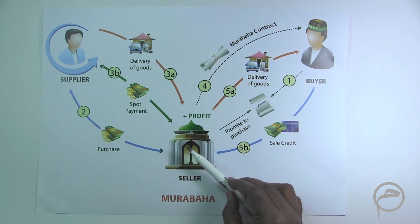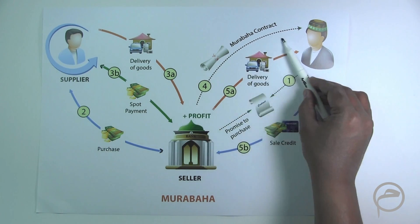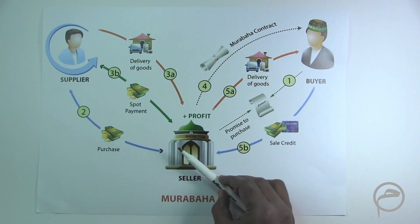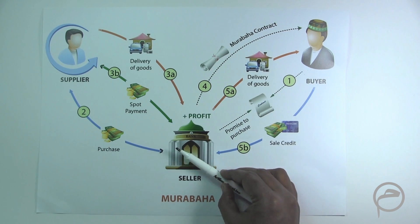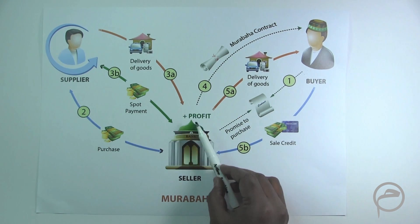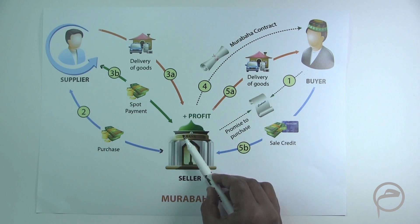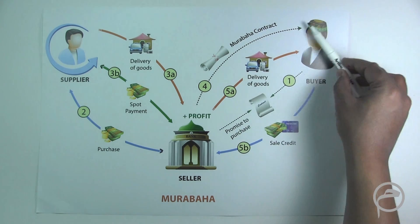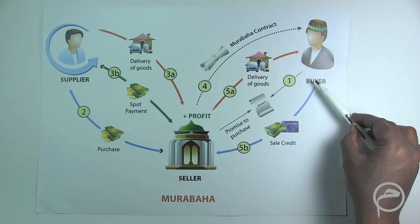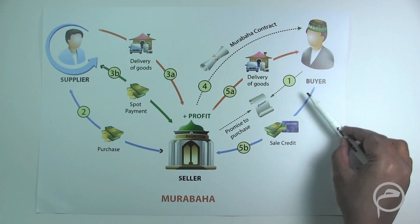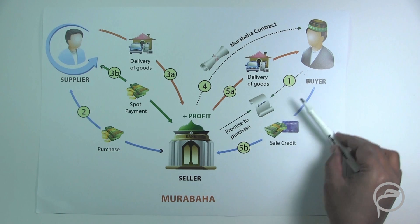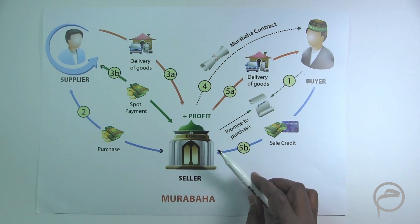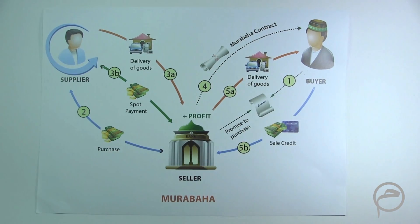The bank then enters into a Murabaha contract with the customer. The bank adds its profit margin and explicitly mentions in the Murabaha contract the amount of profit the bank will be charging to the customer. Then the bank delivers the goods and the customer makes payment, which could either be made immediately or deferred. So this is in brief a Murabaha transaction.